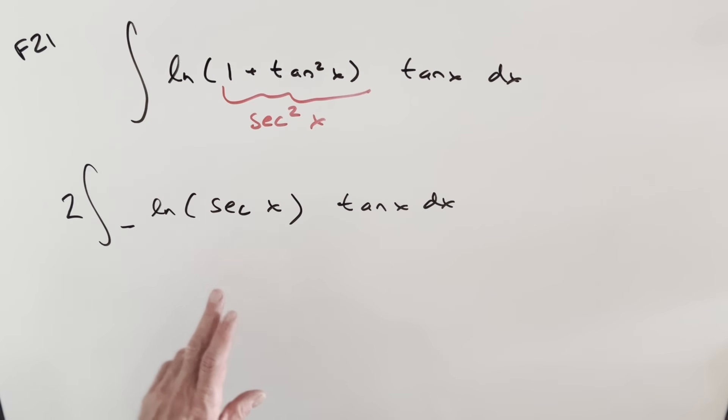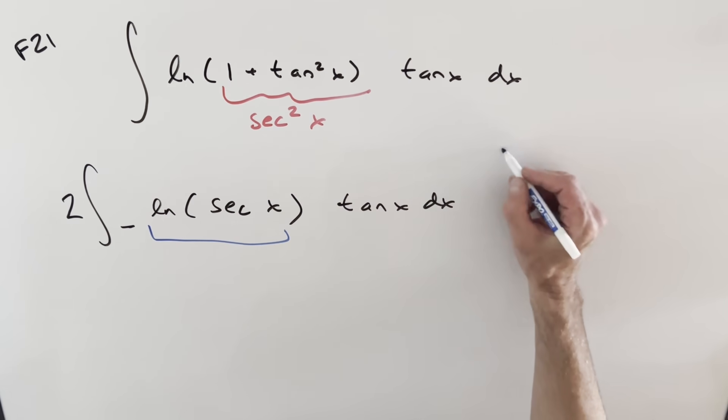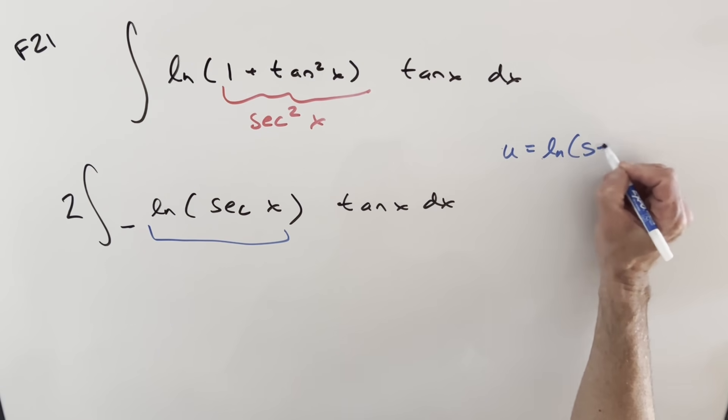And then here, you might already see what's going on. We can do a u sub. Let's do my, let's do the u for that. So we'll do u is ln secant x.